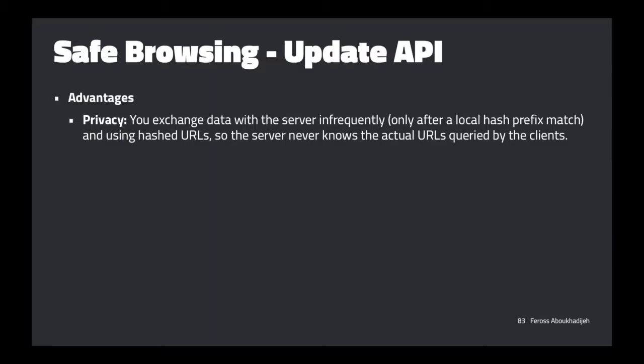There's a better API called the Update API. Instead of telling the server the URL, you download in advance a list of hash prefixes. When Google sees a suspicious URL, it hashes it, then takes the entire set of hashes, chops off the end half, and sends the prefixes down to all browsers. Every browser has a list of prefixes of these hashes.